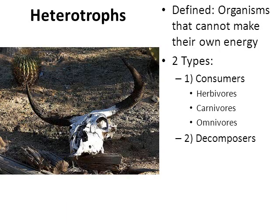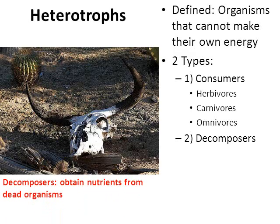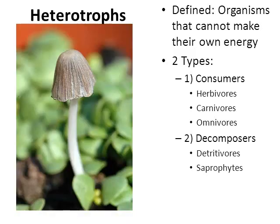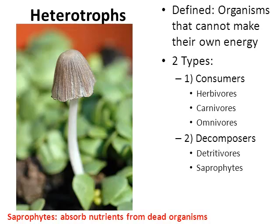Then there's the other kind of heterotroph that we don't usually consider — the decomposers. When organisms die, there are nutrients still left in that organism's body. Decomposers obtain nutrients from dead organisms and eventually cause the organism to decay. The first category are called detritivores — like the earthworm — which ingest and feed on nutrients from dead organisms. The other category are called saprophytes. They don't ingest; they don't have mouths or a stomach. They release enzymes onto whatever they're growing on, then absorb those nutrients directly into their cells.